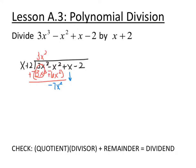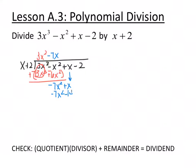Negative x squared minus 6x squared is negative 7x squared. Now bring down the next term. What do I have to multiply x by to get negative 7x squared? Negative 7x squared is x times negative 7x. Multiply back: negative 7x times x is negative 7x squared, and negative 7x times 2 is negative 14x. Subtract off, distributing the negative all the way through. Negative 7x squared plus 7x squared is 0, and x plus 14x is 15x.